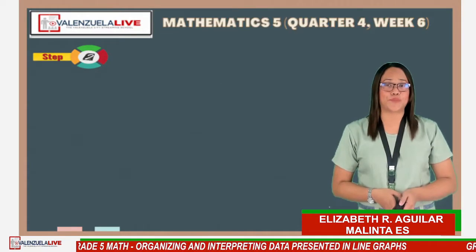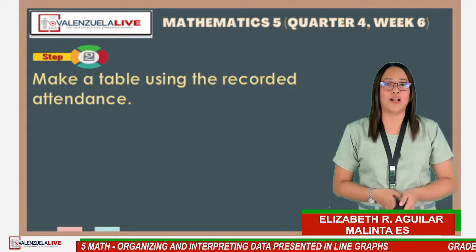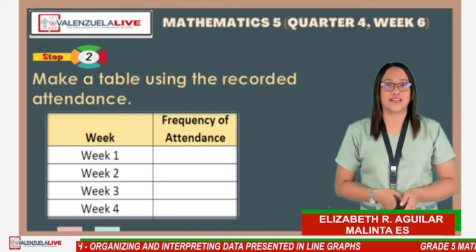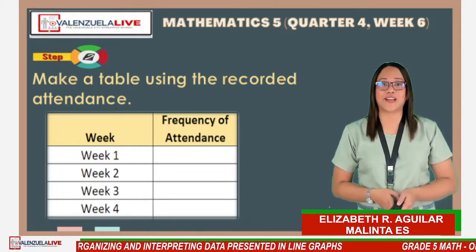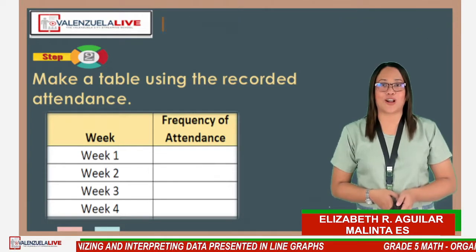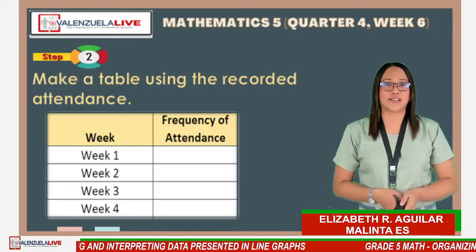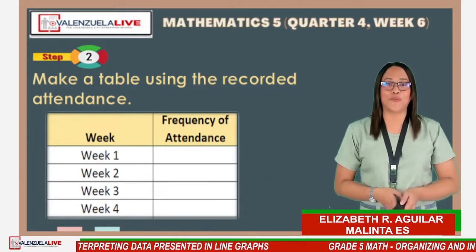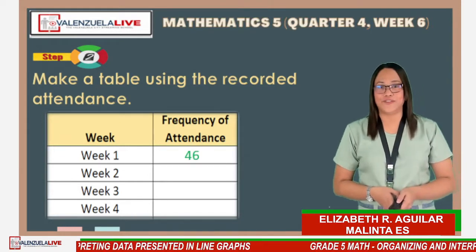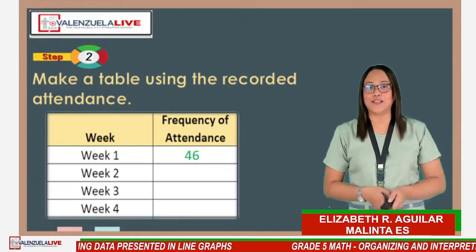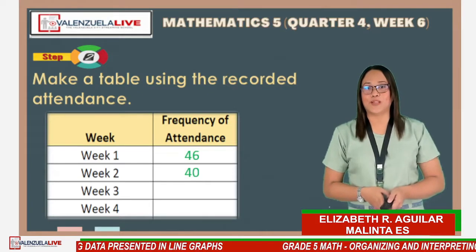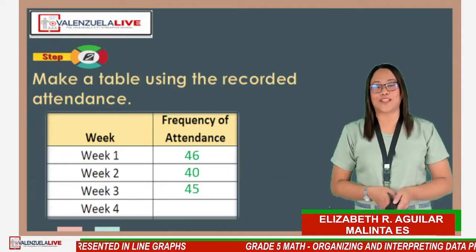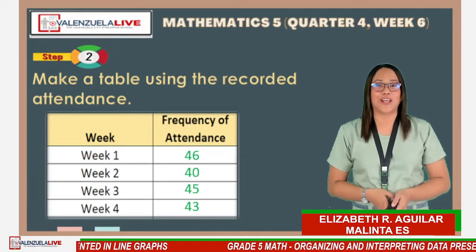For Step 2, we make a table using the recorded attendance. In the first column we have the week, and in the second column we have the attendance. Week 1: 46 pupils, Week 2: 40 pupils, Week 3: 45 pupils, and Week 4: 43 pupils.